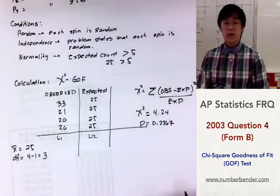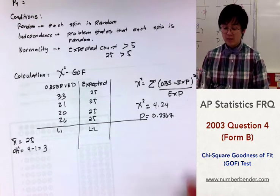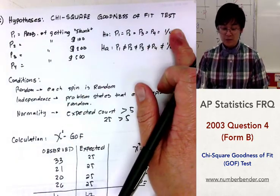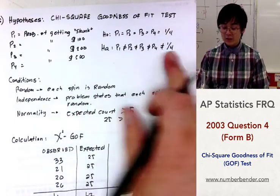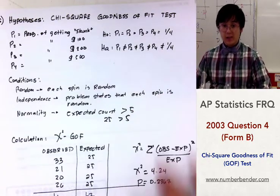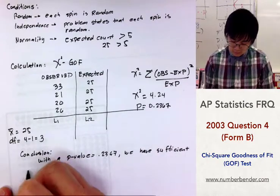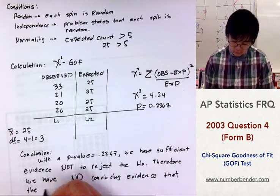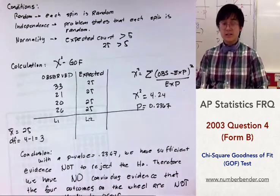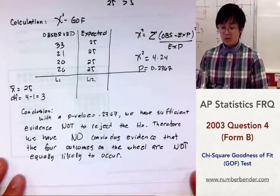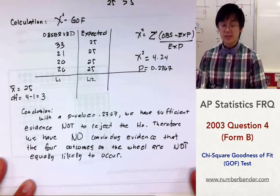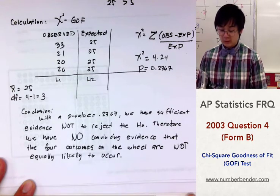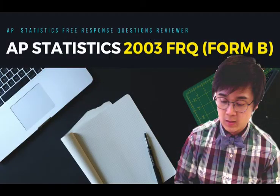Based on our p-value and hypothesis, we fail to reject the null hypothesis. We do not have convincing evidence that the alternative hypothesis is true — meaning there is no statistical evidence that the wheel is unfair. This is our conclusion for part C, showing that the four outcomes are equally likely to occur.